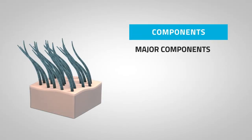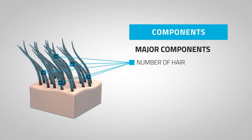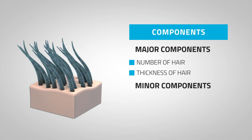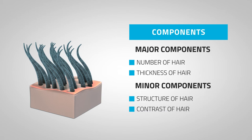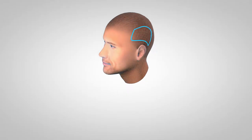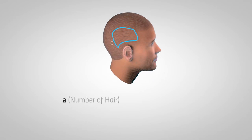Coverage is related to four components. The two major components are the number of hairs and the thickness — the caliber of the hair. The minor components we cannot control are the structure of the hair (wavy, curly, or straight) and the color contrast between the hair and the skin. Coverage value is the mathematical way to calculate coverage, by multiplying the number of hairs per square centimeter by the caliber of the hair in millimeters to get a single number.